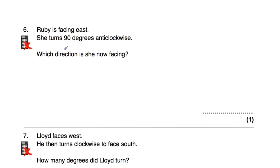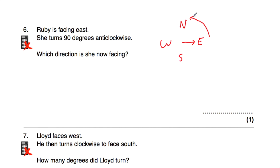Question number six: Ruby is facing east and she turns 90 degrees anti-clockwise. Which way is she now facing? Let's draw our compass directions — north, east, south, and west. She's facing east. She turns 90 degrees, which is a quarter turn, and she turns anti-clockwise — a clock normally turns this way, so anti-clockwise is the other way. A quarter turn anti-clockwise from east means she will now be facing north.